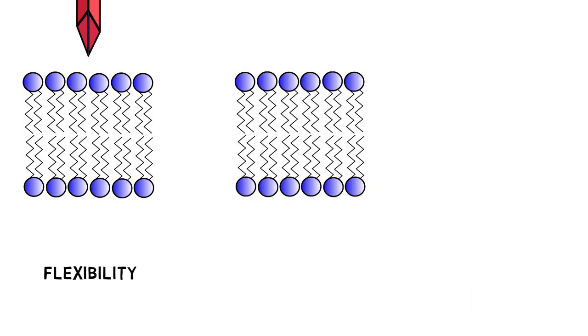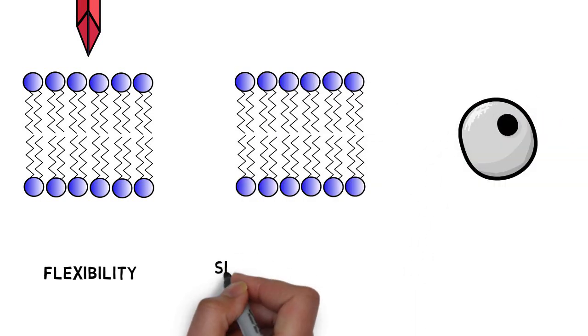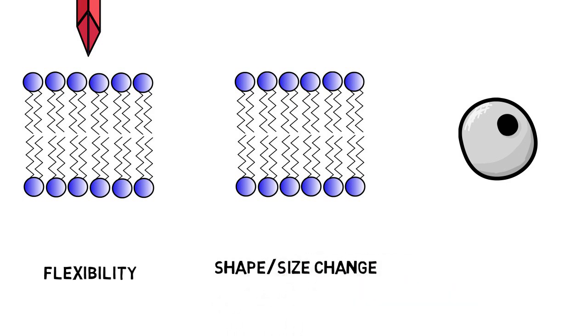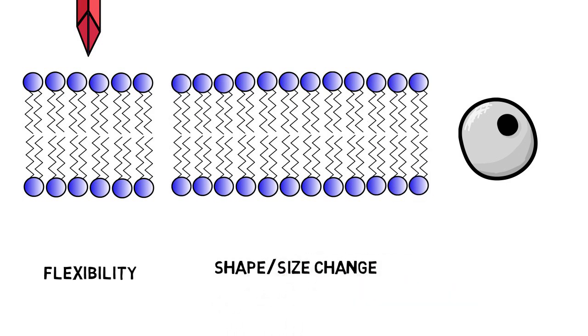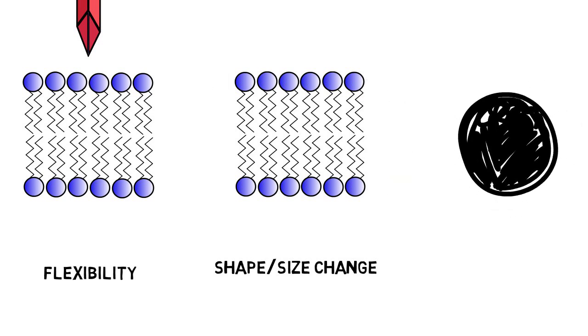Finally, during cell movement or cell division, the cell needs to constantly change its shape and size, and phospholipid molecules can be easily added on to increase its size or removed to decrease its size during such processes.